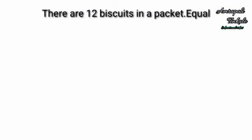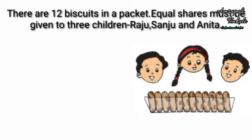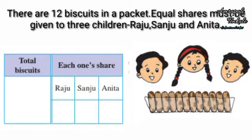There are 12 biscuits in a package. Equal shares must be given to 3 children: Raju, Sanju, and Anita. Total biscuits are 12. First we will give one turn by turn.